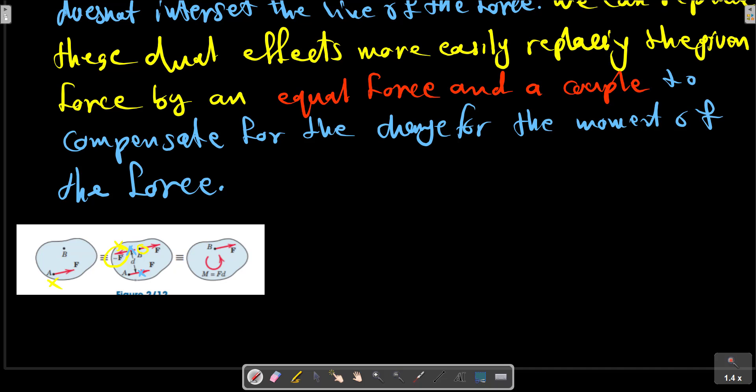at the same point, the couple M equals Fd. The transfer is seen in the middle figure where the equal and opposite forces F and minus F are added at point B without introducing any external effects on the body. We see that the original force at A and the equal and opposite force at B constitute the couple M equals Fd.